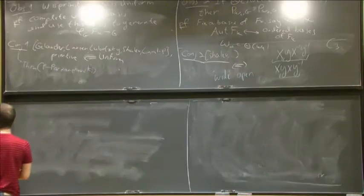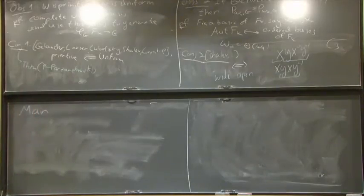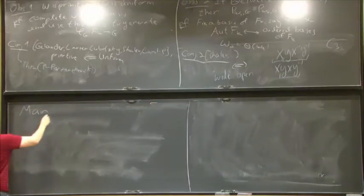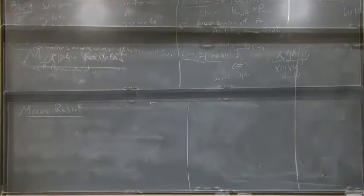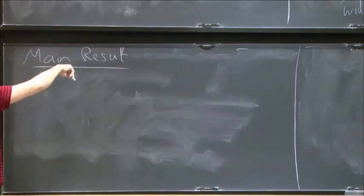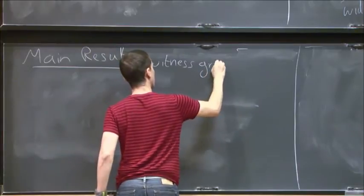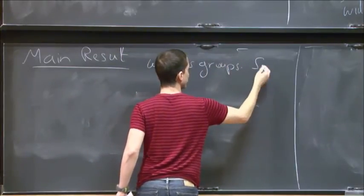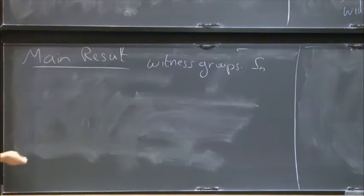This was the introduction. Now I will state the main result. To prove this conjecture, we need witness groups. Our witness groups are Sn, the symmetric group on n elements. We always need an infinite family of groups - a finite family of finite groups will never be enough. And what we show is the following: there's this circle of ideas.